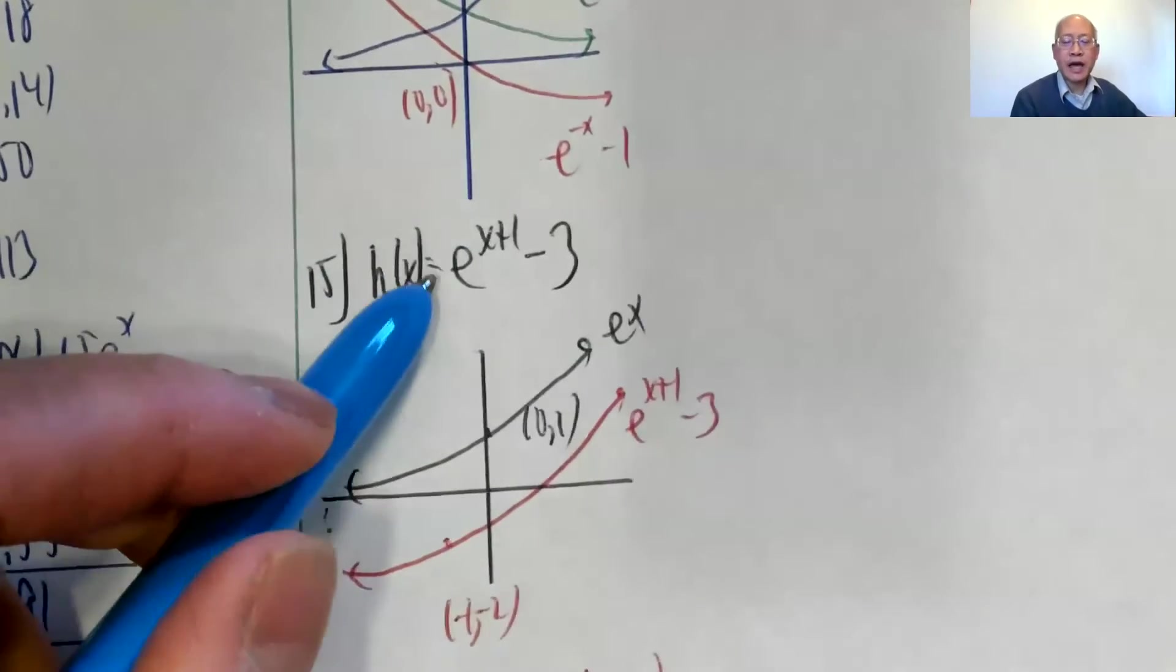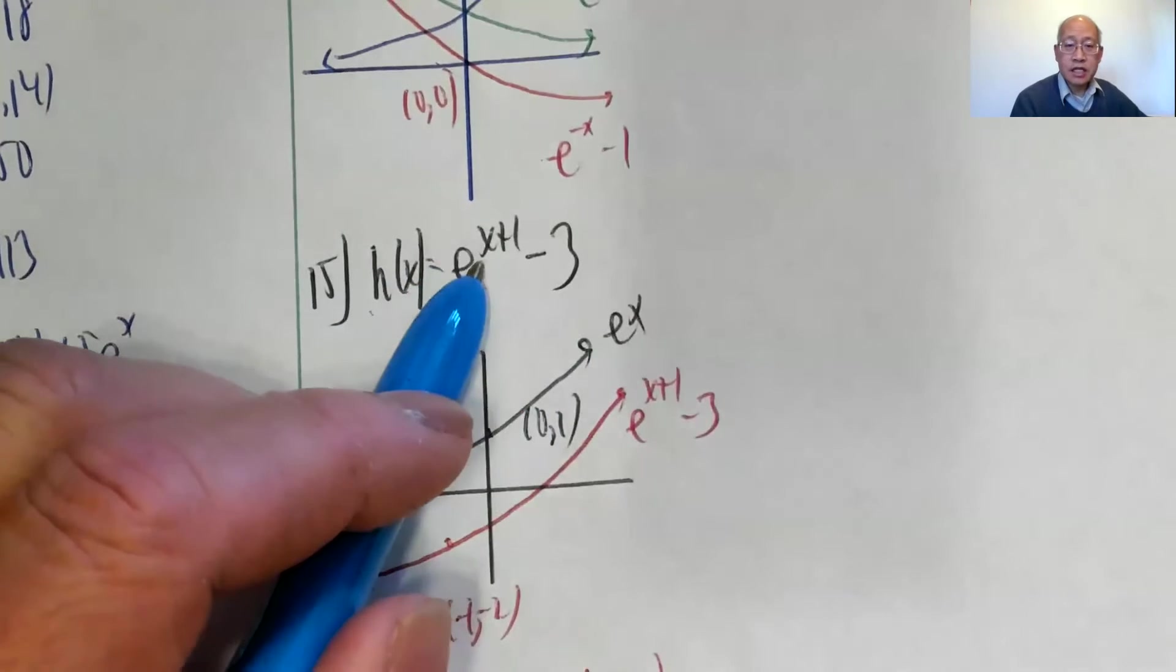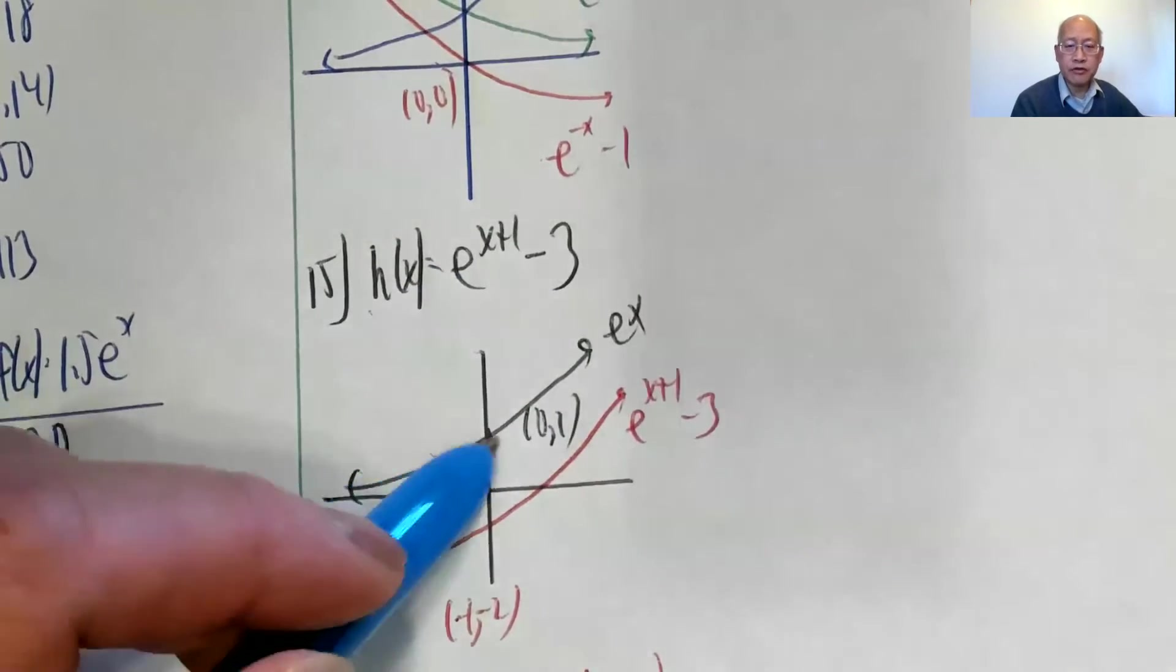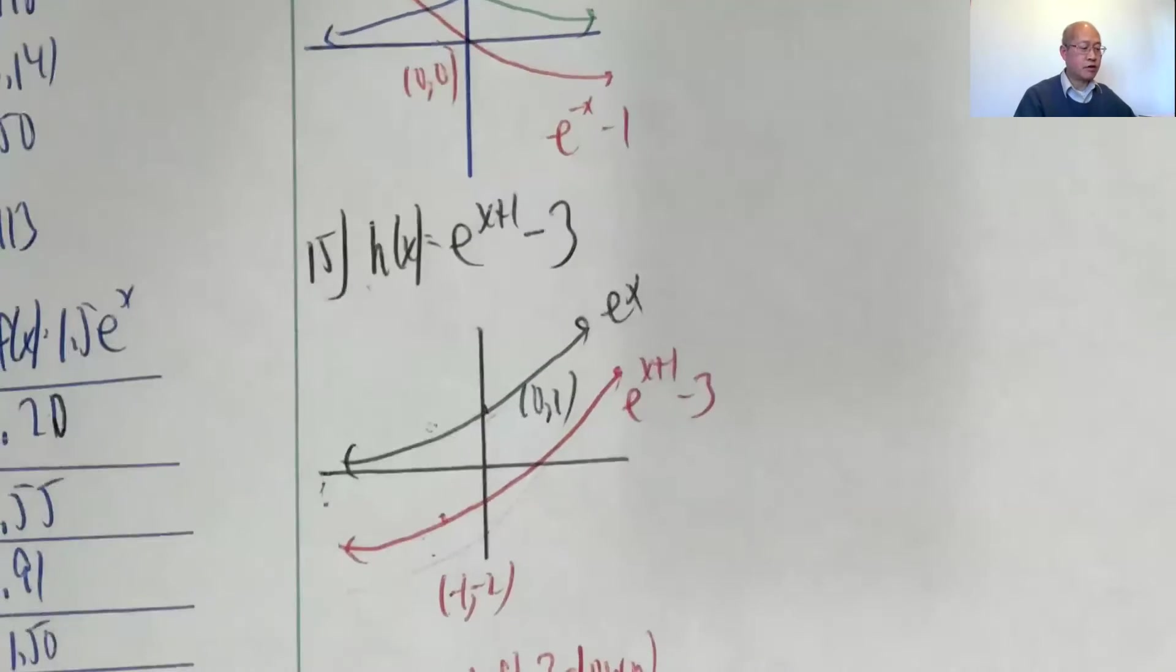Number 15, h of x is e to the x plus 1 minus 3, so take the original e to the x, this moves 1 to the left, and 3 down, so 1 left from 0, 1, 3 down becomes negative 1, negative 2, so there's the graph that I have.